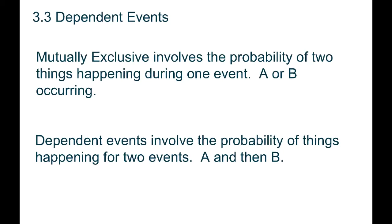Today we're going to look at independent and dependent events, but before we do we'll make sure we understand the difference. In our last topic we were doing probabilities that had to do with two things like mutually exclusive — looking at the chances of two things happening at the same time or two different outcomes for one event.